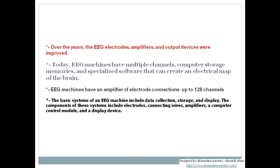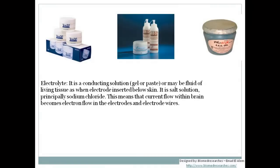The basic systems of an EEG machine include data collection, storage, and display. The components include electrodes, connecting wires, amplifiers, computer control module, and a display device. A key component for starting an EEG test is the electrolyte — a conducting solution, either gel or paste, or a fluid of living tissues when electrodes are inserted below the skin, which is principally a salt solution such as sodium chloride.